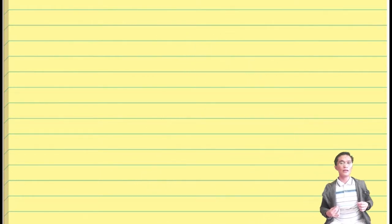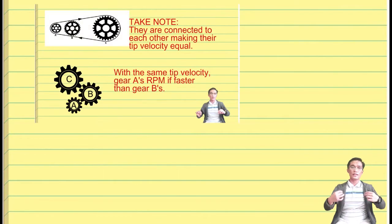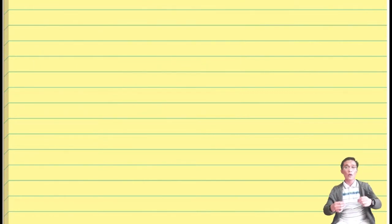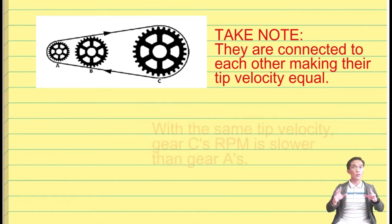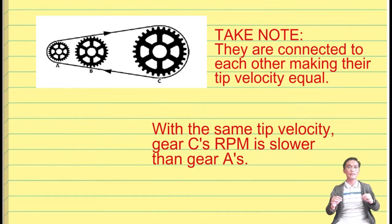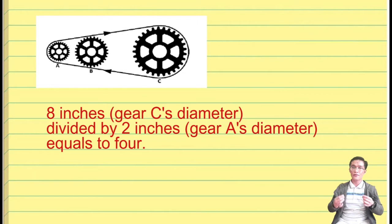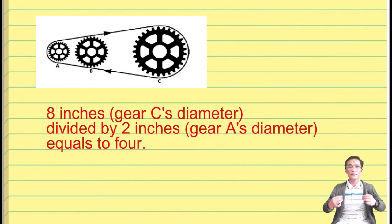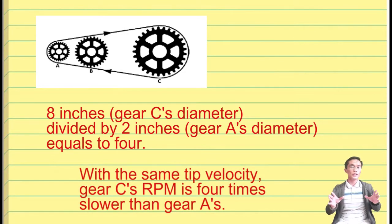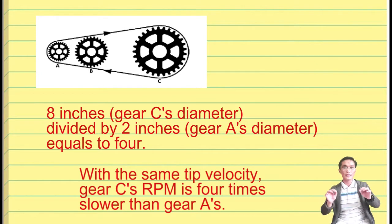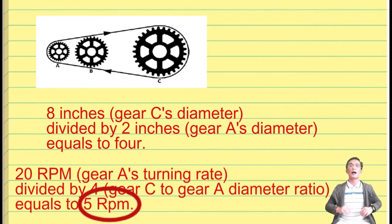Because of our previous question, we now know the basic concept for this problem. We know all of them are connected by a chain, so gear C's turning rate is lower than gear A. By computing, the diameter of gear C is 4 times larger than gear A. This means that the turning rate of gear C is 4 times slower than gear A, arriving at an answer of 5 RPM.